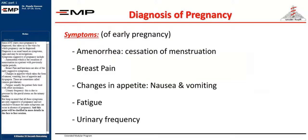Since ANC starts once pregnancy is diagnosed, this takes us to the ways by which pregnancy can be diagnosed. Diagnosis is as usual based on symptoms, signs, and maybe investigations.